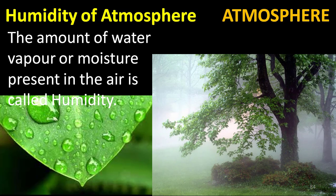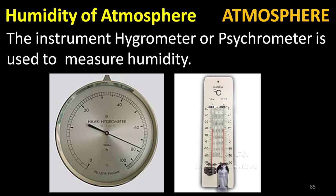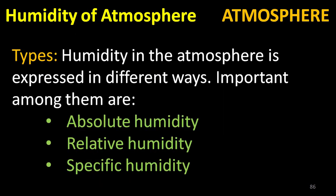The amount of water vapor or moisture present in the air is called humidity. The instrument hygrometer or psychrometer is used to measure humidity. Let's look at the types of humidity.